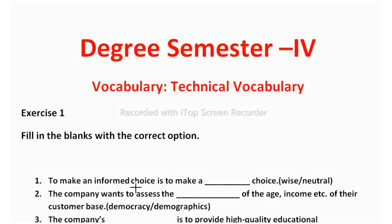Now let us start our exercises. The first one: to make an informed choice is to make a blank choice — wise or neutral? An informed choice is when someone wants to take a decision and first understands all options available, whether they will give profit or risk. The correct answer is wise choice, because the person analyzes all options before choosing.